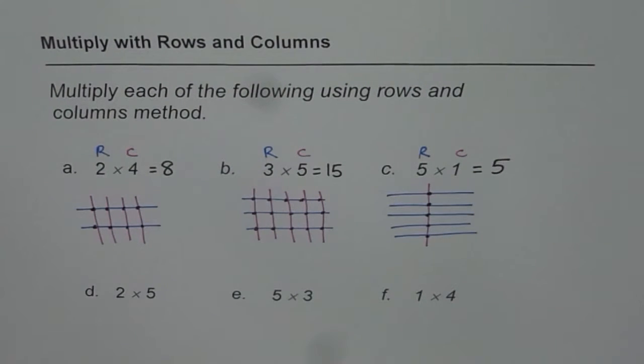This is such a simple and interesting technique, right? You can use 2 different colors as I did. And then draw rows with the number as first column. And number of columns be the second number. And get your answer. So practice and find out answer for what is 2 times 5? What is 5 times 3? And what is 1 times 4? I hope you are finding it interesting and learning at the same time. Thank you.